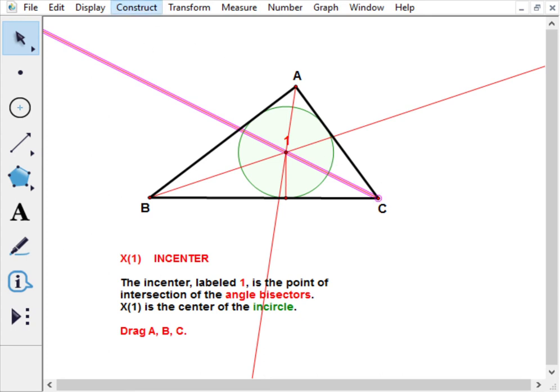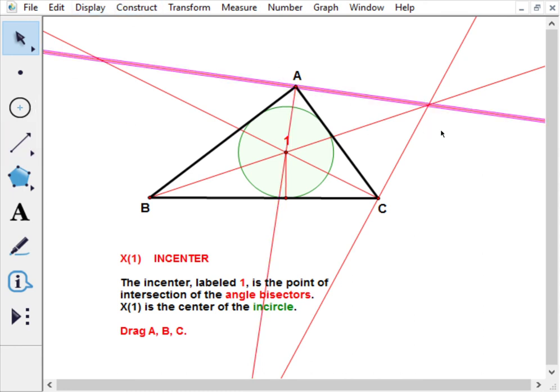We do the same thing for this angle bisector and that point, construct a perpendicular line. Then we see that we get a point over here which is in some sense playing a similar kind of role.